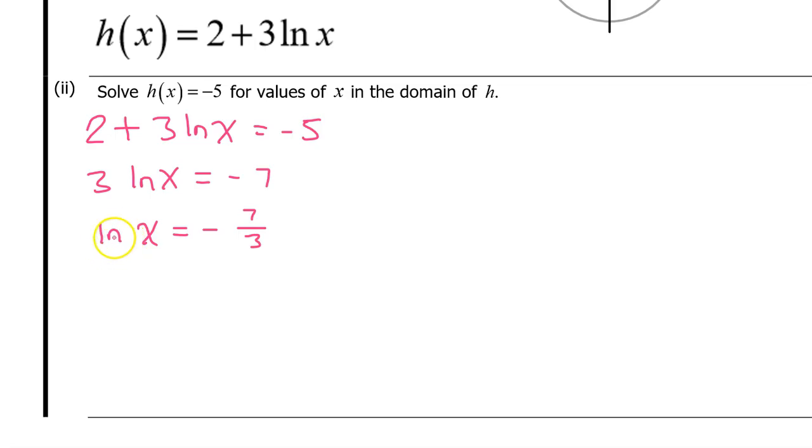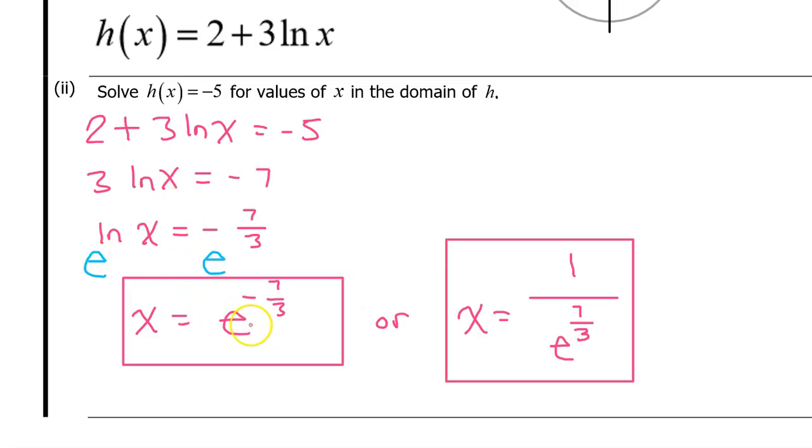To cancel out the natural log, we can drop a base e on both sides of the equation like this. It's called exponentiating both sides of the equation. Natural log and e to the x power are inverse functions which cancel each other out, so on the left hand side, we will have simply x. x equals e to the negative 7 thirds power. For this particular problem, that's a full credit answer. But very often, the directions will say that you can't have a negative exponent, so be prepared to write the answer as 1 over e to the positive 7 thirds power.